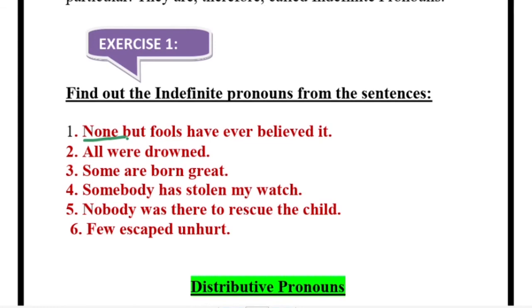Just a random word — 'Some are born great': 'some' is an indefinite pronoun. 'Somebody has stolen my watch' — it is not said in particular who the thief is. 'Nobody was there to rescue the child' — not even one person, and who that person is not said in particular — indefinite pronoun. Last one — 'Few escaped unhurt': 'few' — those people who escaped without being hurt — and this word 'few' does not include these five children or those five girls — any few, some few of the people over there.